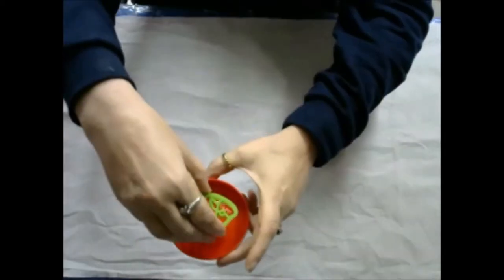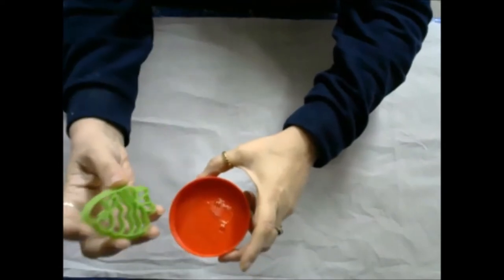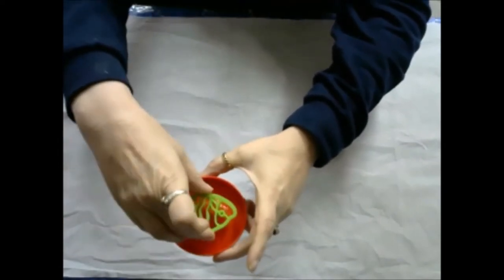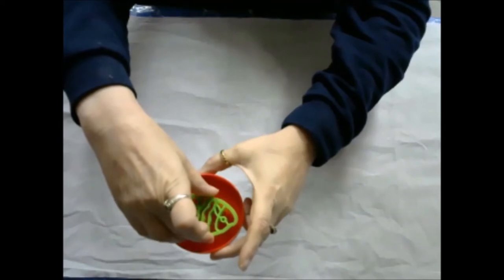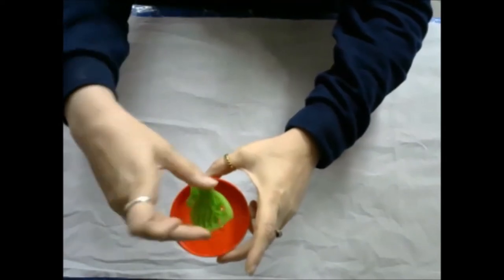So I just take a small container and pour just a little bit of glue in the bottom, and then I take my shape and dip it into the glue. Now sometimes a film will cover it.